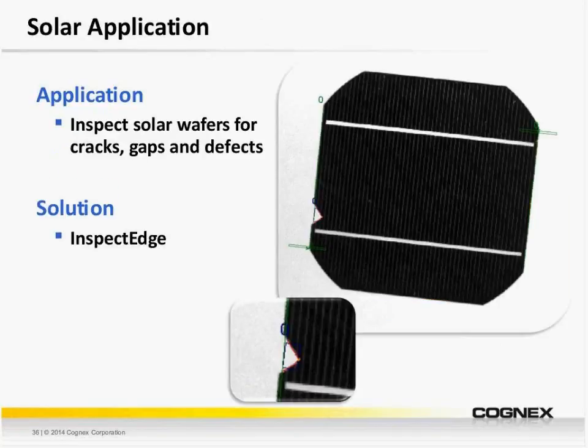We have a few more examples. In the solar industry, we're inspecting the edge of a solar wafer for cracks and defects. As noted from the zoomed image on the bottom, we're able to detect a chip along the edge. Within the tool, we can define defects by their depth, total area, and total width, so it's easy to hone in on true tolerances.